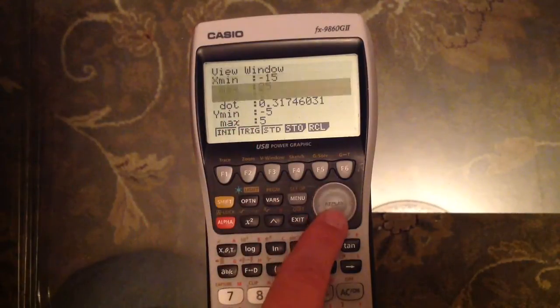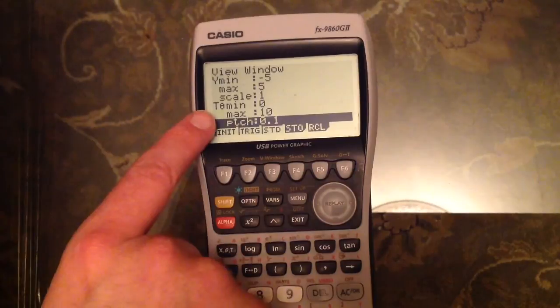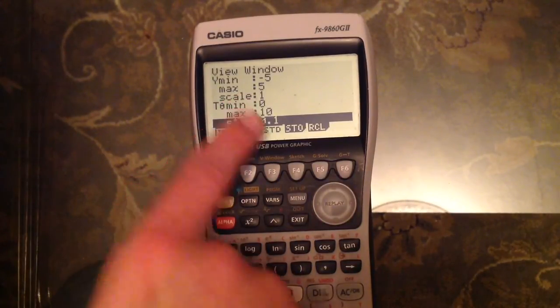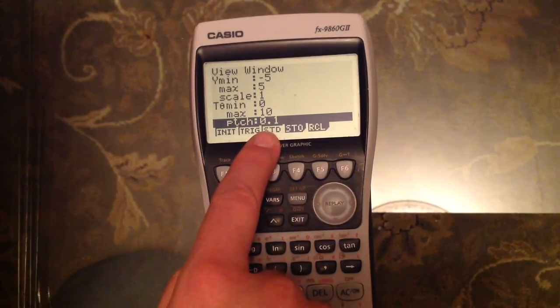You've got your X and Y, but if you actually scroll down, it will also show you what T is doing. So here it's just calculating T from 0 to 10. The pitch is how often it calculates, so it's calculating every 0.1 value.